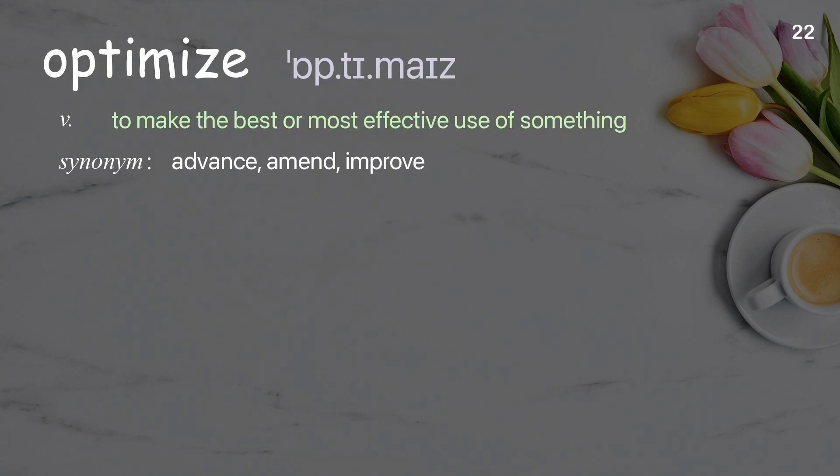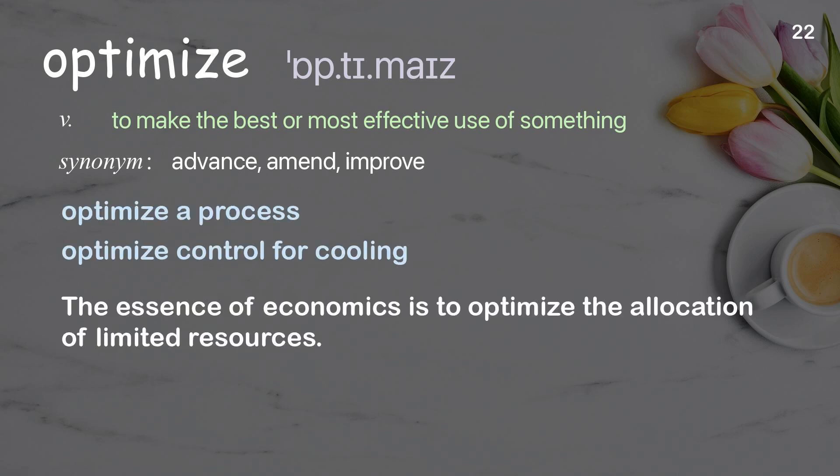Optimize: to make the best or most effective use of something. Examples: optimize a process; optimize control for cooling. The essence of economics is to optimize the allocation of limited resources.